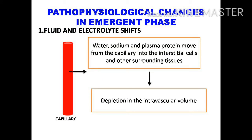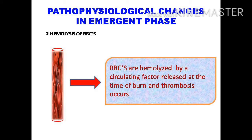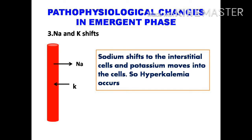Pathophysiological changes during the emergent phase: immediately after the burn, fluid and electrolyte shifts occur. Water, sodium, and plasma proteins move from the capillary into interstitial cells and surrounding tissues, decreasing intravascular volume and causing hypovolemic shock. Red blood cells are hemolyzed by a circulating factor released at the time of burn, and thrombosis occurs. Sodium shifts into interstitial cells while potassium moves into cells, causing hyperkalemia.